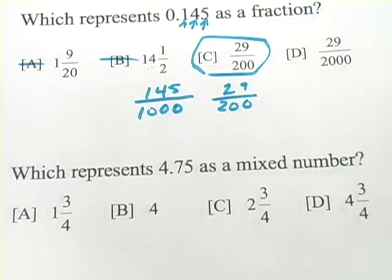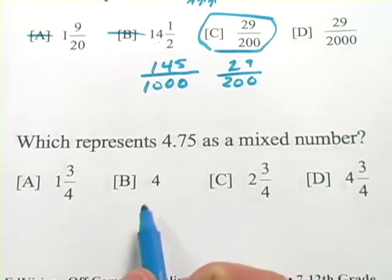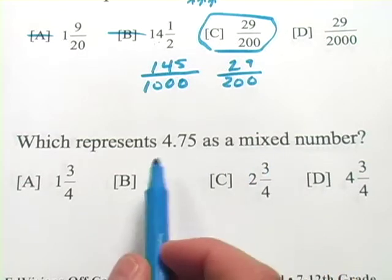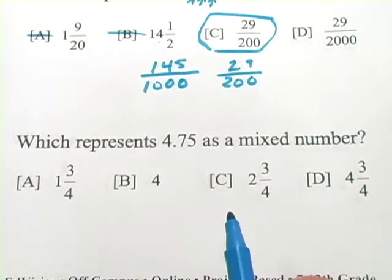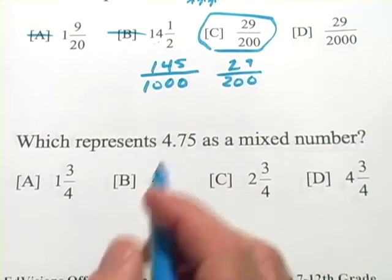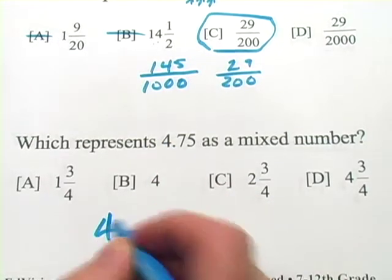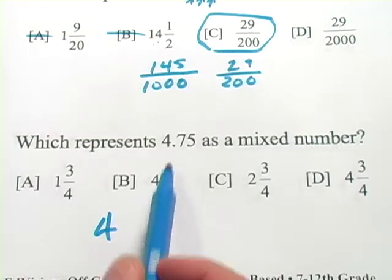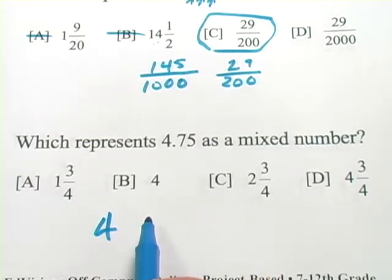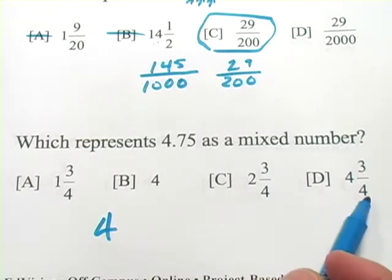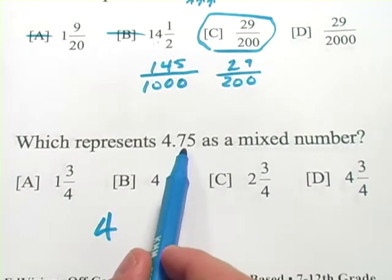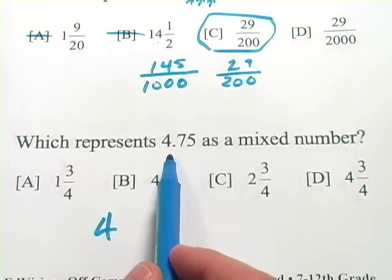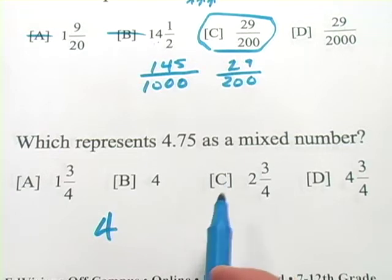All right, let's look at one more. This one says, which represents 4.75 as a mixed number? And you might know right off the bat what the .75 part is. There's going to be the 4 as a number and part of your answer. And so you can probably rule out A and C. B is just a 4, so it doesn't do anything with the .75. So really the only good answer here is 4 and 3 fourths. And you might know that .75 is 3 fourths. Think about a dollar, 75 cents is three quarters of a dollar. It's the same idea.